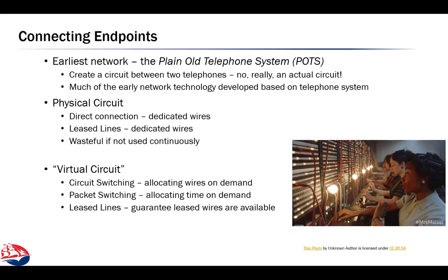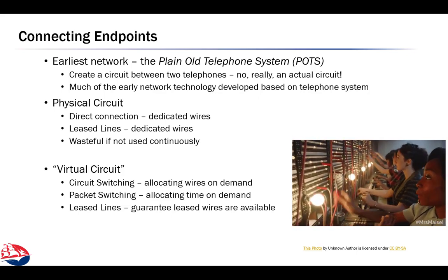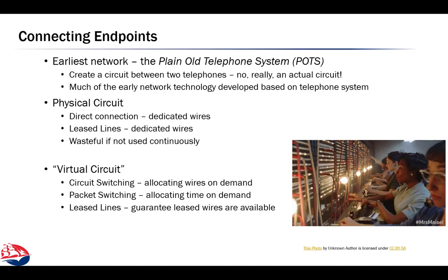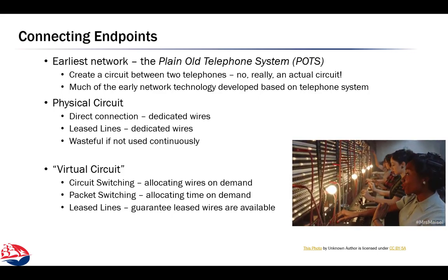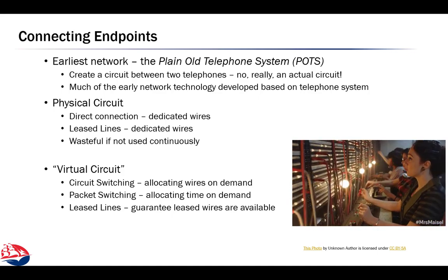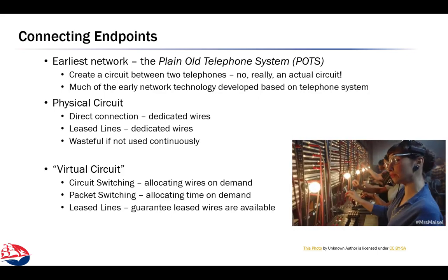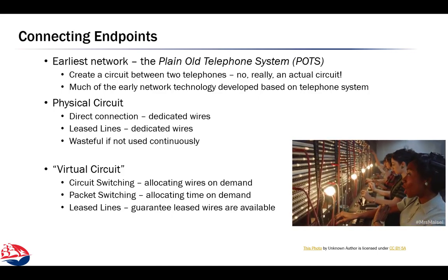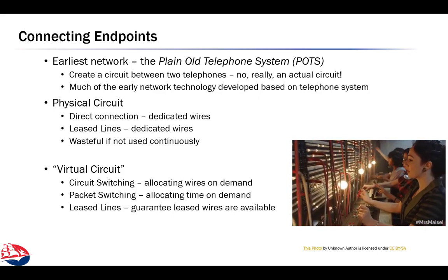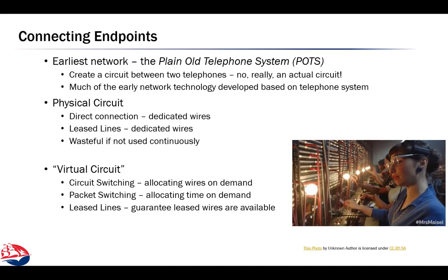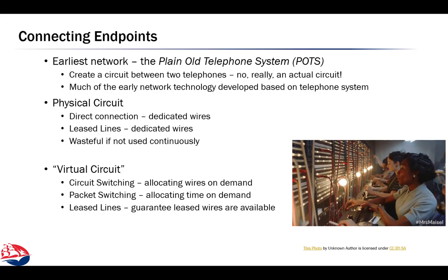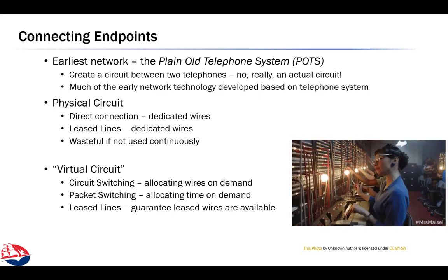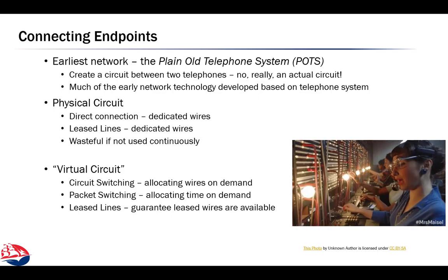Networks are all about connecting endpoints, and there are really three ways to do this. The first is to directly connect the endpoints together with wires — how the early telegraph systems worked. But those wires were dedicated to those stations, and when they weren't being used, that capacity was wasted.